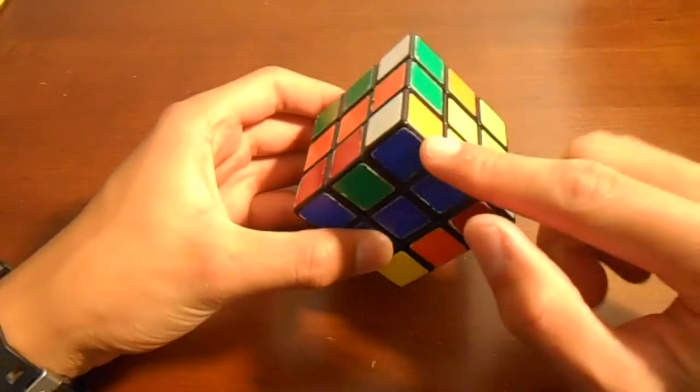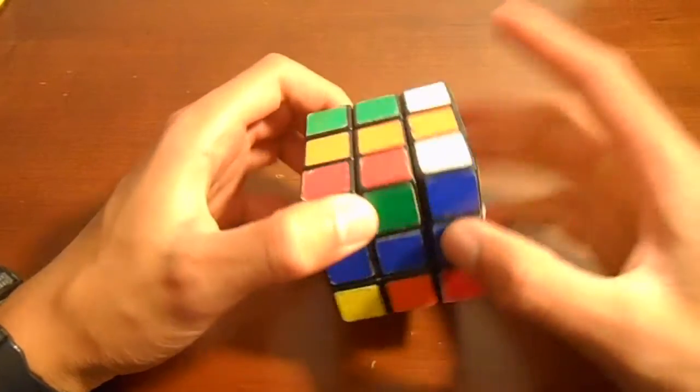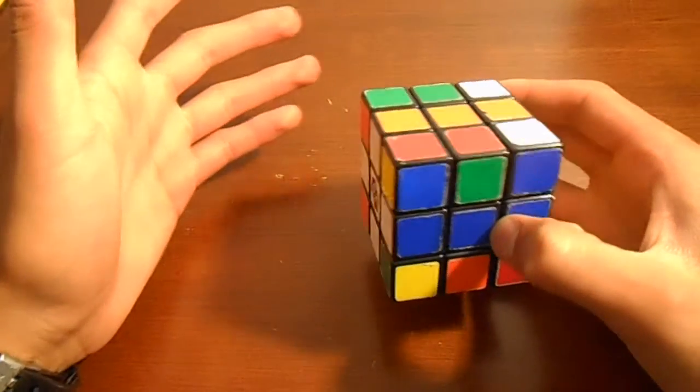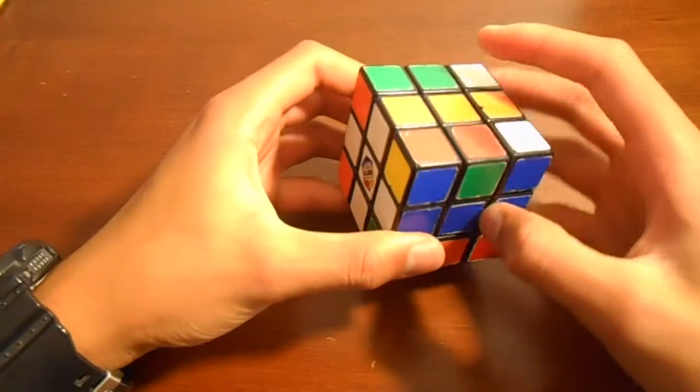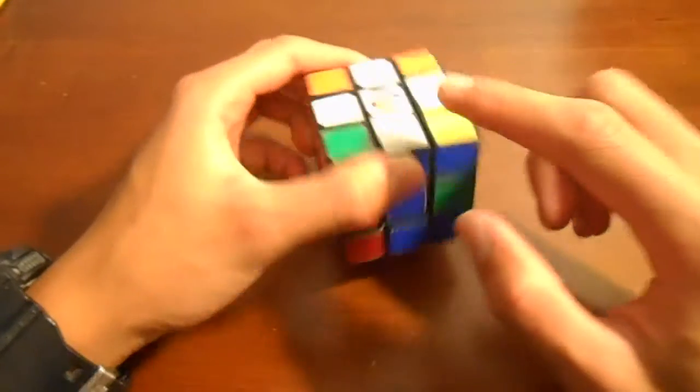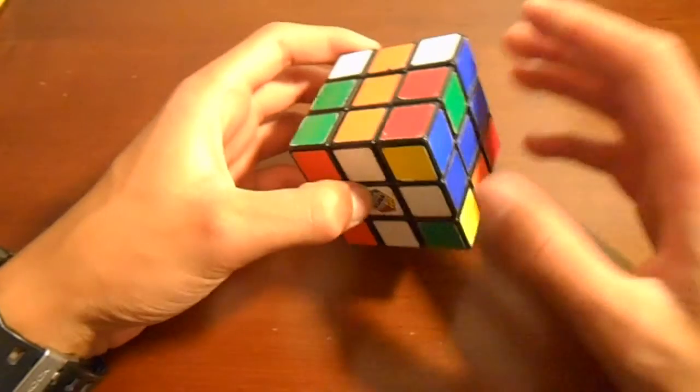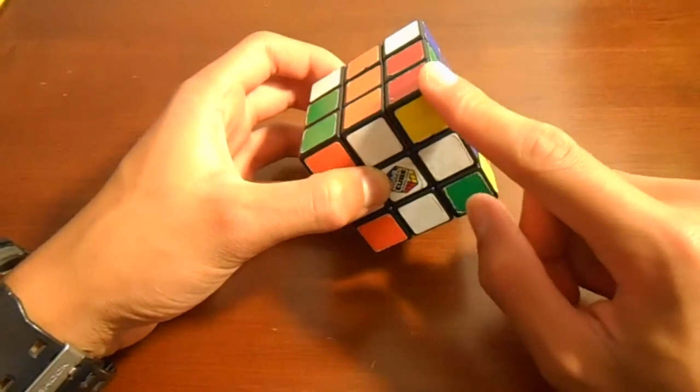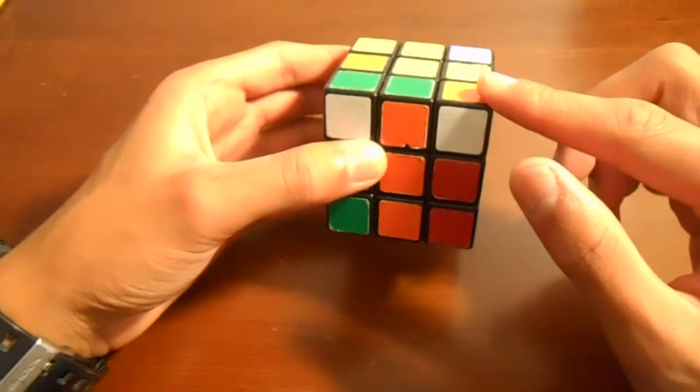I'll just pick this one here which is the white orange blue piece. How we figure out where that's going to go is just look at the center pieces. Here's white, here's orange, and here's blue, and it goes in between all of them which is just this corner piece here. Now what you have to do is orient it above that slot so that you could turn it in like this and match it up.